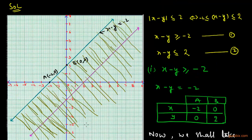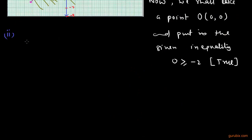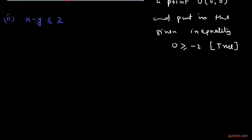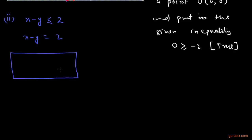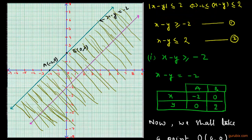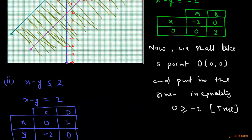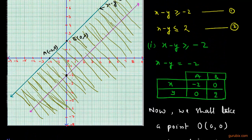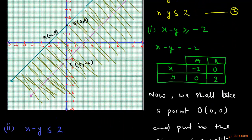This region represents the solution set of inequation number 1. Now we solve inequation number 2: x minus y is less than or equals to 2. We convert it into the equation x minus y equals 2. From the table: if x equals 0 then y equals negative 2 (point C at 0, negative 2), and if y equals 0 then x equals 2 (point D at 2, 0).